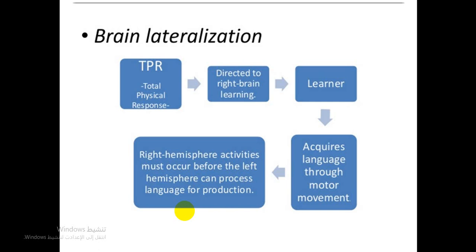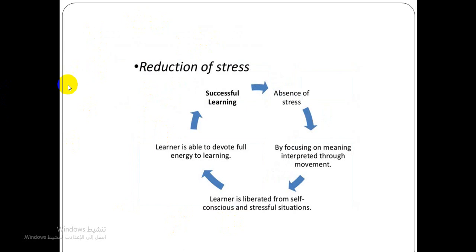Right brain activity depends on motor movement, and left brain activity depends on watching and learning. The third hypothesis of this method is reduction of stress. An important condition for successful language learning is the absence of stress. This focuses on meaning interpreted through movement rather than on language forms studied in the abstract.